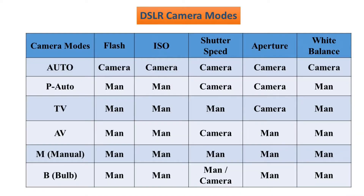Now let's look at the camera modes in a table. First is auto — the camera automatically sets ISO, shutter speed, aperture, and white balance. In program mode, you can operate the flash, ISO, white balance, shutter speed, and aperture settings.